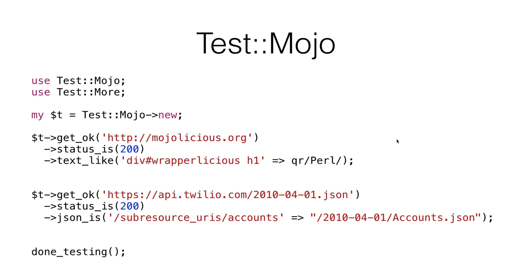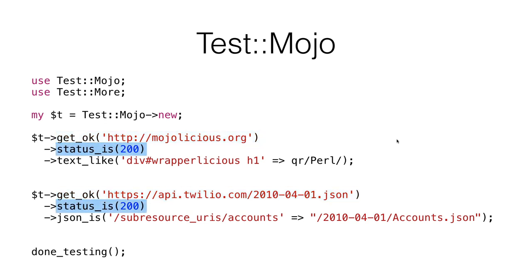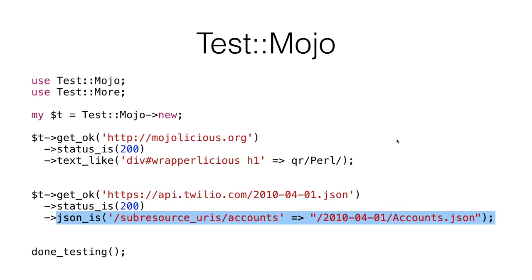Test::Mojo adds a Mojo User Agent object and extends Test::More with typical HTTP and WebSocket assertions like status_is, get_ok, and text_like. This makes mechanized testing of web resources very simple. You hit Mojolicious.org and check you have a network connection; hit Twilio's API and check status 200 on both. On the HTML response, use DOM CSS syntax to check that expected content exists. On the JSON response, use JSON Pointer syntax to check a specific field. It wouldn't replace Selenium for JavaScript testing, but for everything else it's incredible.